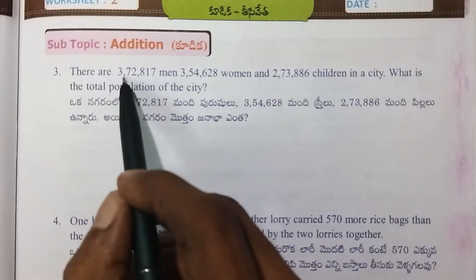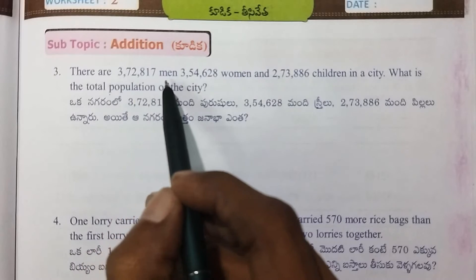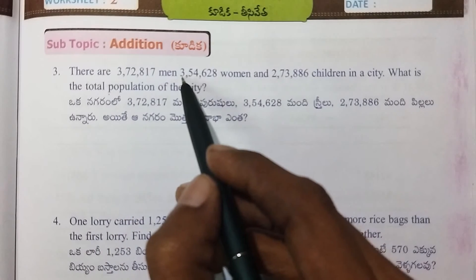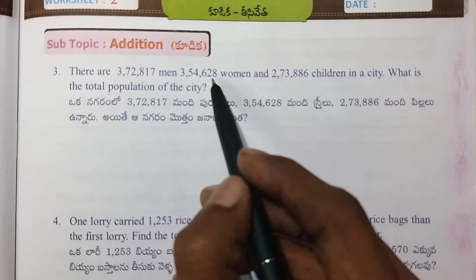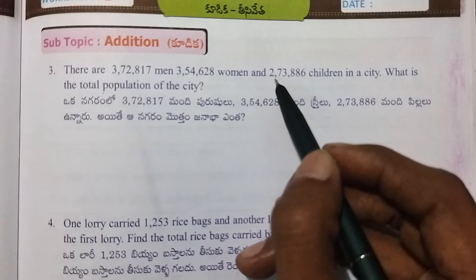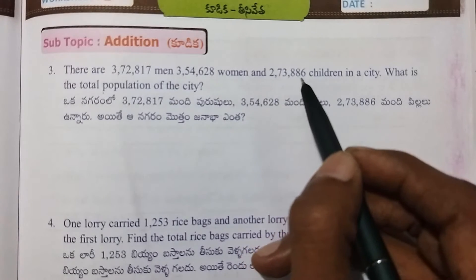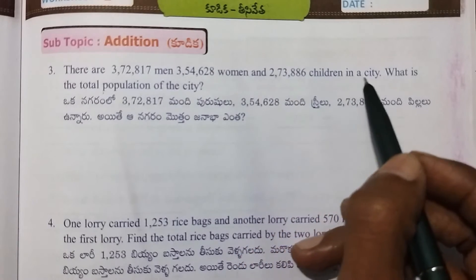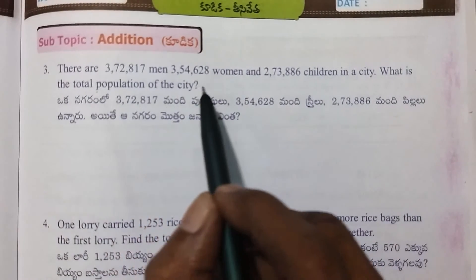There are 3,72,817 men, 3,54,628 women, and 2,73,886 children in a city. What is the total population of the city?